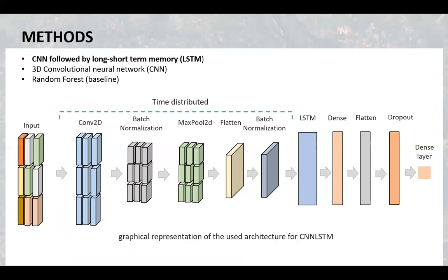Here you can see an example of one of the models. The input for the model were tensors generated from the Google Earth Engine based pre-processing framework, and the output was the predicted yield. The neural network starts with a 2D convolutional layer followed by batch normalization and max pooling. With the time-distributed wrapper, the 2D convolutional layer is applied to every temporal slice for feature extraction.